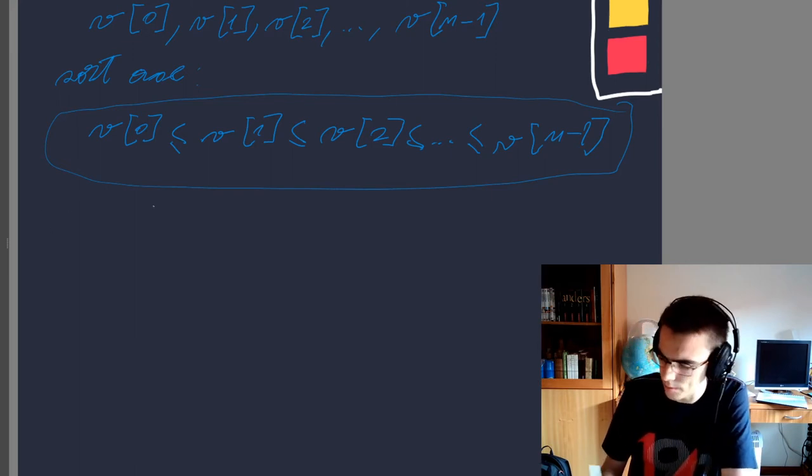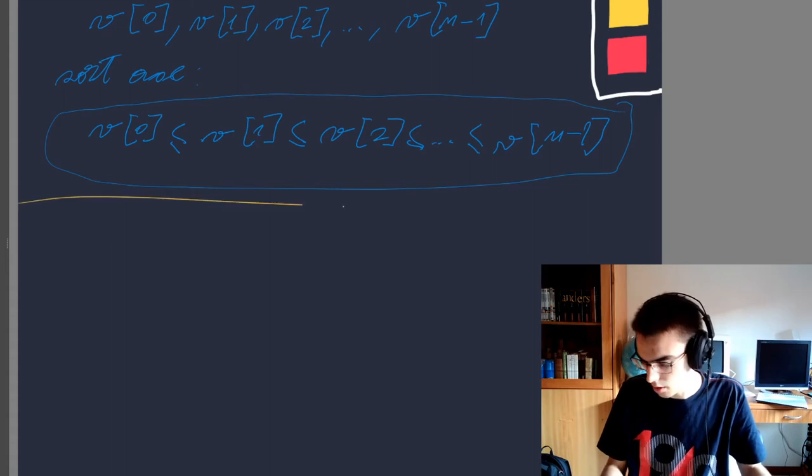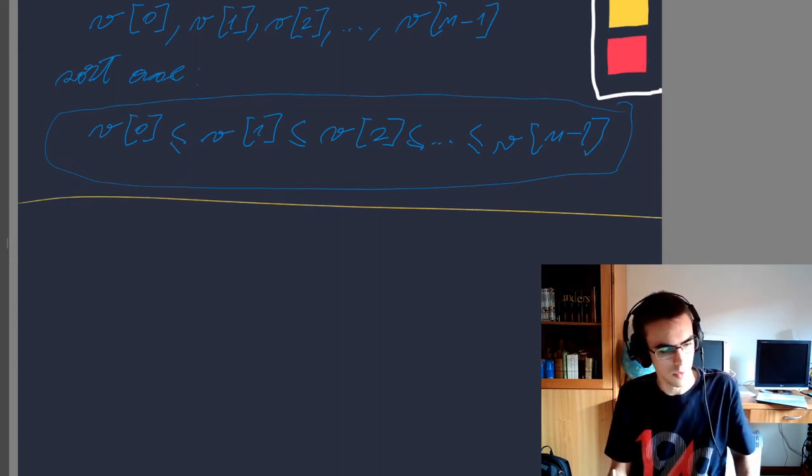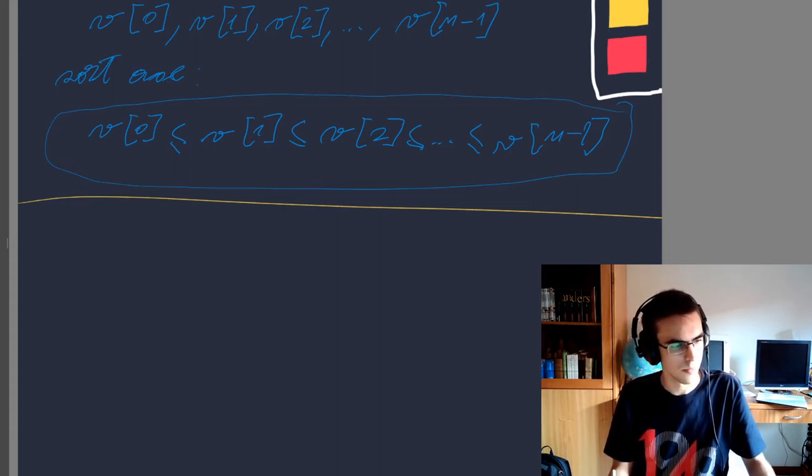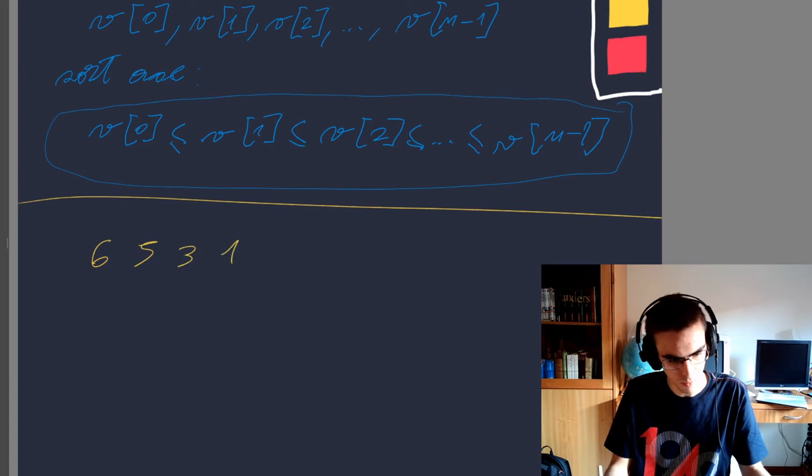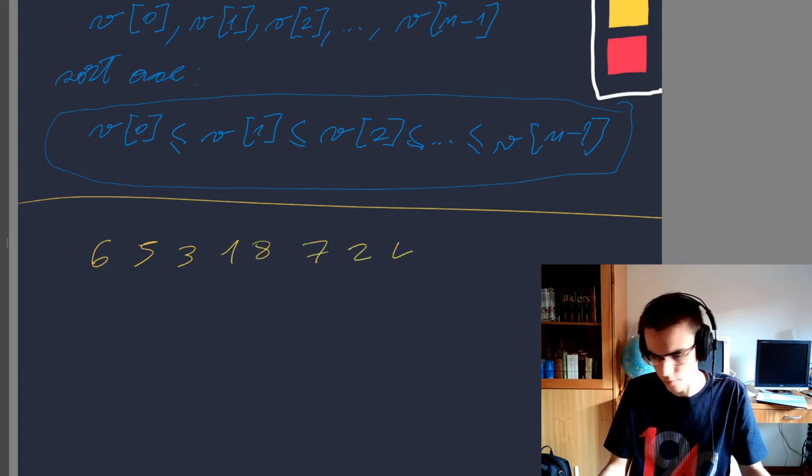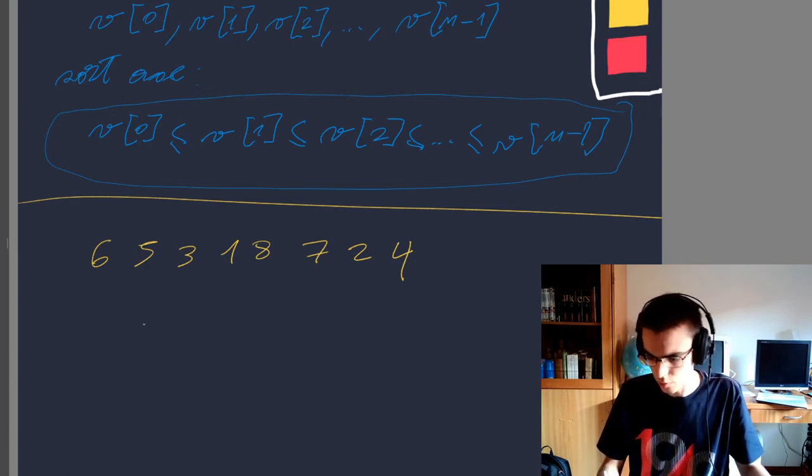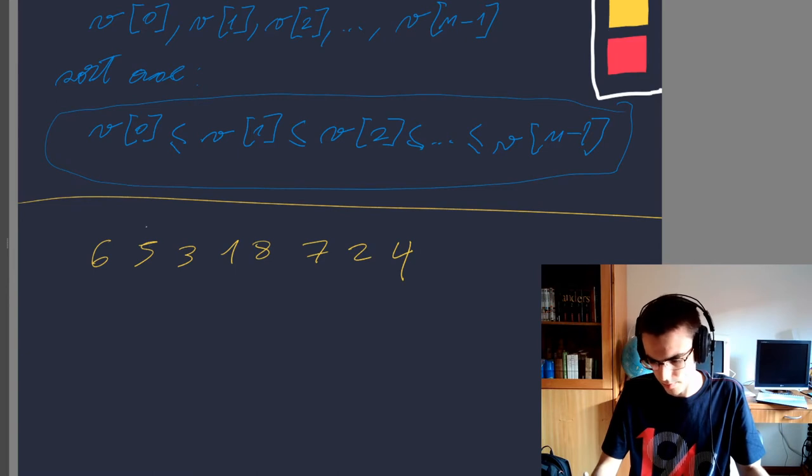I will use the same example from Wikipedia. So, six, five, three, one, eight, seven, two, four. And what we are going to do is to pick this one because it is greater than this one and we are going to resort them. So five, six.